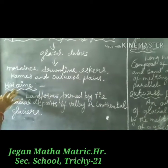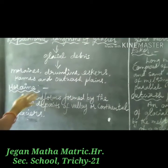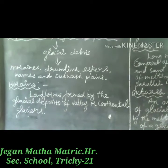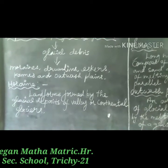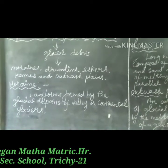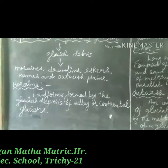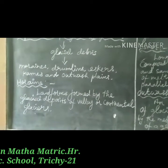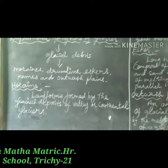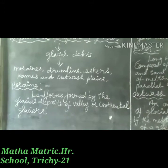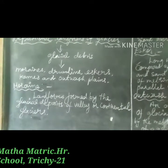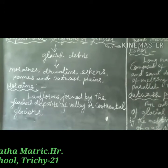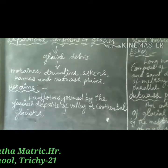Now let us learn the topic Moraines. The landforms formed by the glacial deposits of valley or continental glaciers are termed as moraines. They are of various shapes and sizes like ground, terminal, and lateral moraines, etc.